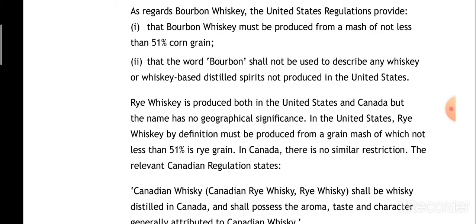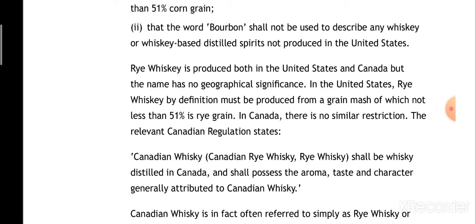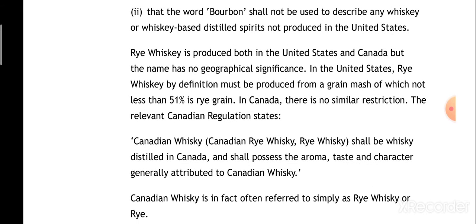Let us look at some points: according to United States rules, when can we call a whisky bourbon whisky? The raw material for bourbon whisky is corn grain — maize. Also, the word 'bourbon' cannot be used for any other whisky or whisky-based distilled spirit except the whisky from the bourbon region.